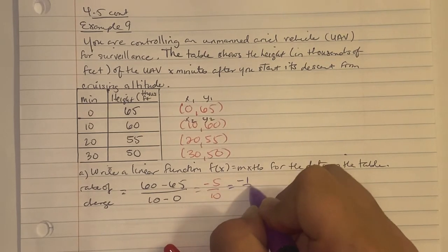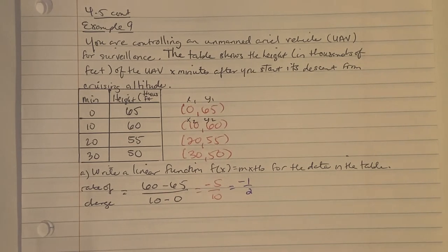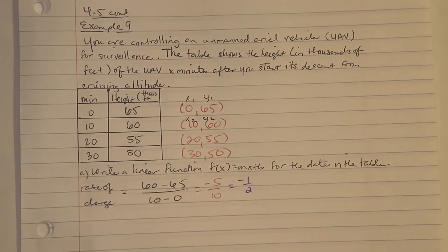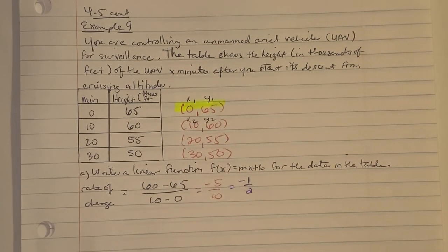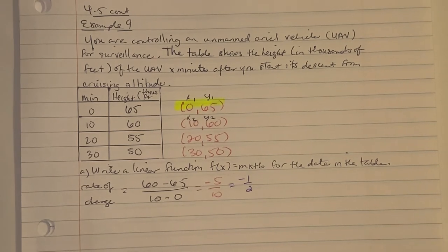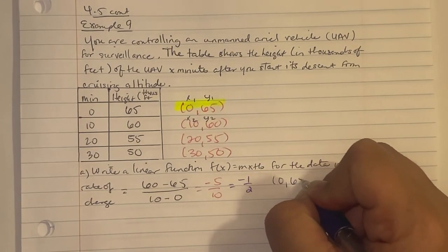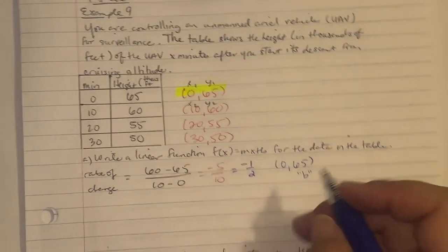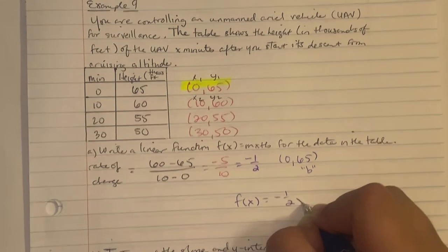The first ordered pair (0, 65) is the y-intercept, so b equals 65. Therefore, our function is f(x) equals (-1/2)x plus 65.